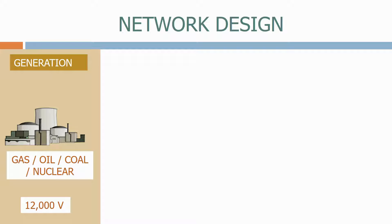Firstly we have generation. Generation can be gas, oil, coal or nuclear. Generating stations tend to need large amounts of water, so they tend to be located near the coast or near rivers. Generation systems tend to operate at 12,000 volts or 12 kV.